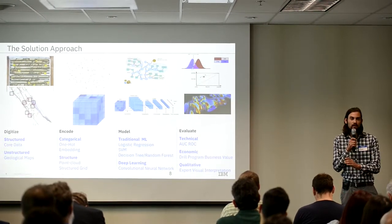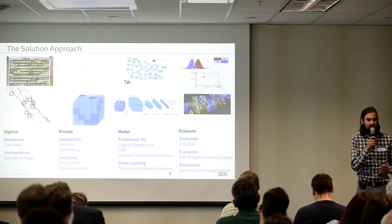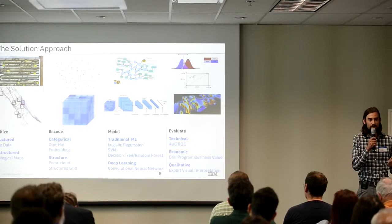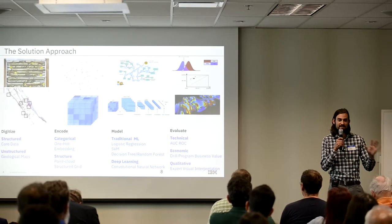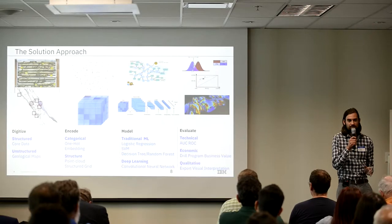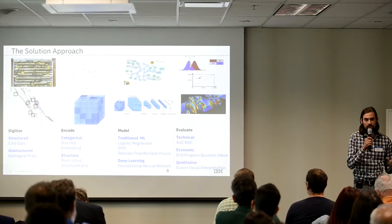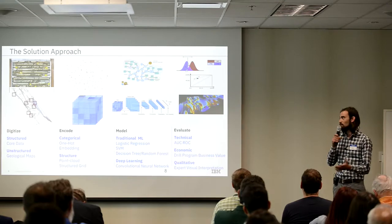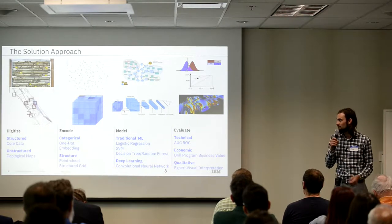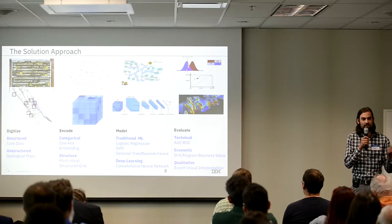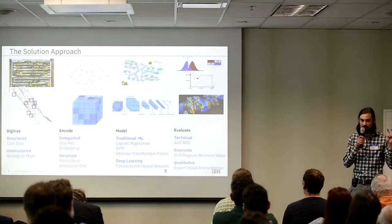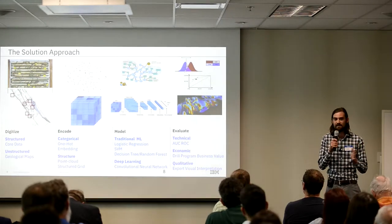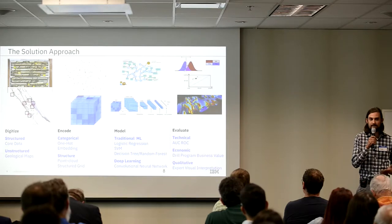The other type of encoding is how we encode the structure of this information. We have a point cloud with points in three-dimensional space, which many ML models can consume. But advances in image recognition using convolutional neural networks expect a structured grid representation. So we put a lot of effort into transforming that 3D point cloud into a structured grid formation — the cuboid you see at the bottom of the screen — and then interpolating and filling these voxels. A lot of work and design went into building the actual structure of the dataset before applying any modeling.